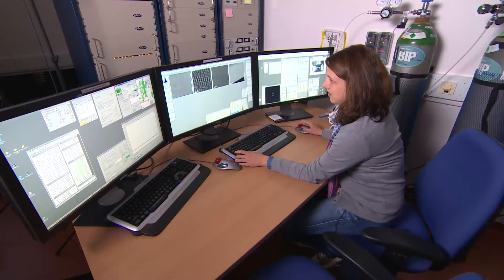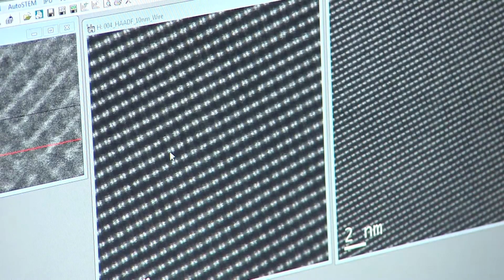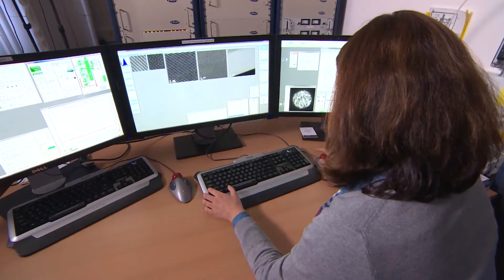A STEM is a scanning transmission electron microscope and the way it works is the equivalent of an optical microscope using light to illuminate and magnify things.